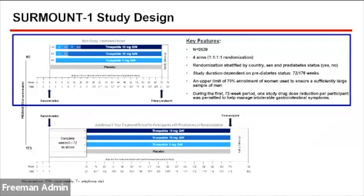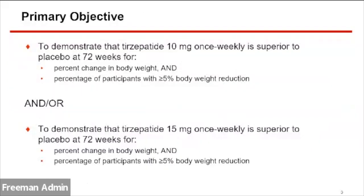During the first 72-week period, only one drug dose reduction per participant was permitted to help manage any intolerable gastrointestinal side effects. The primary objectives were to demonstrate that tirzepatide 10 milligrams or 15 milligrams was superior to placebo at 72 weeks. This included percent change in body weight and percentage of participants with greater than or equal to 5% body weight reduction.